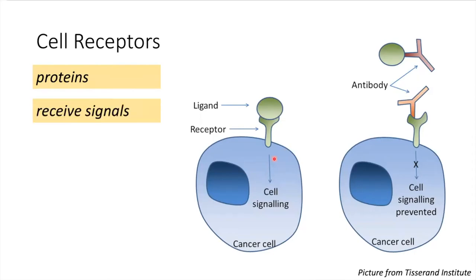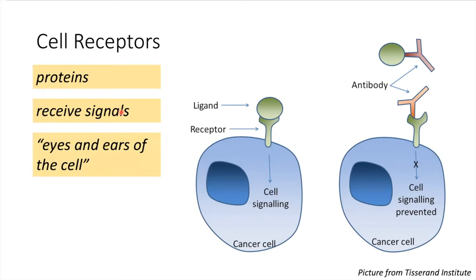They're called receptors because they receive signals — that's why they're also called the eyes and ears of the cell. Because whenever there's a particular substance or a ligand, they would actually detect it and bind to it. Some would be very specific for a certain substance.